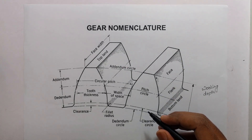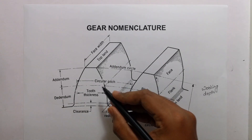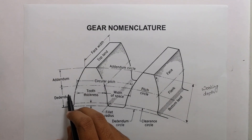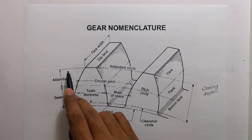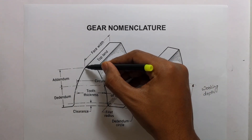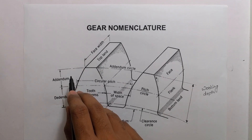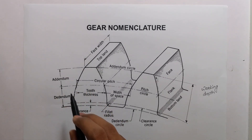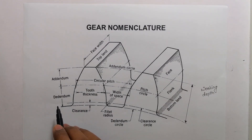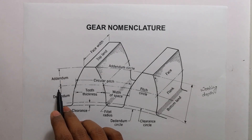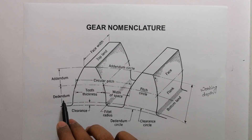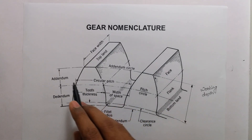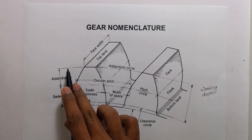Next is addendum. Addendum is the radial distance of a tooth from the pitch circle to the top of the tooth. Then dedendum — it is the radial distance of a tooth from the pitch circle to the bottom of the tooth.